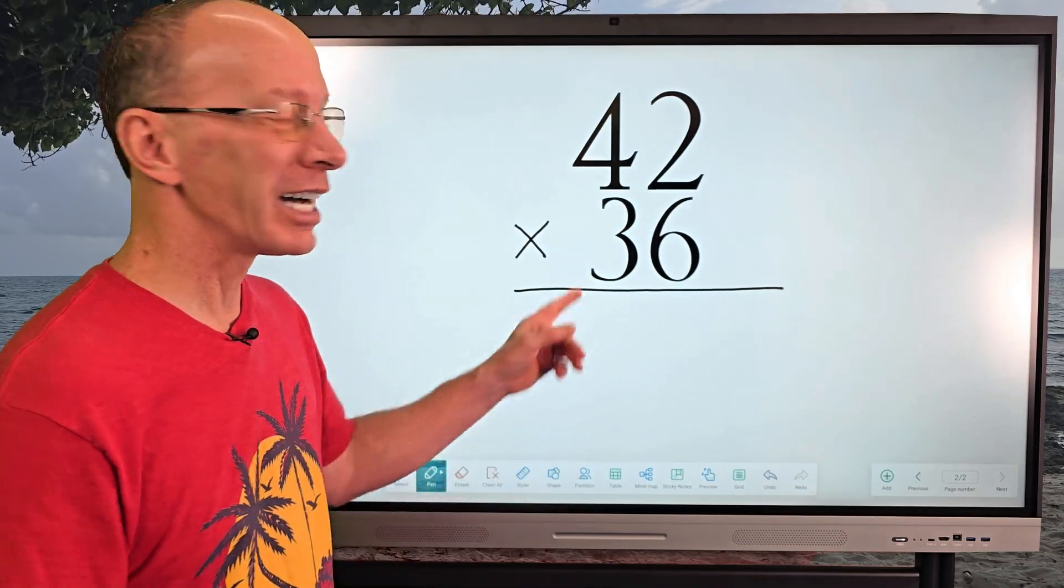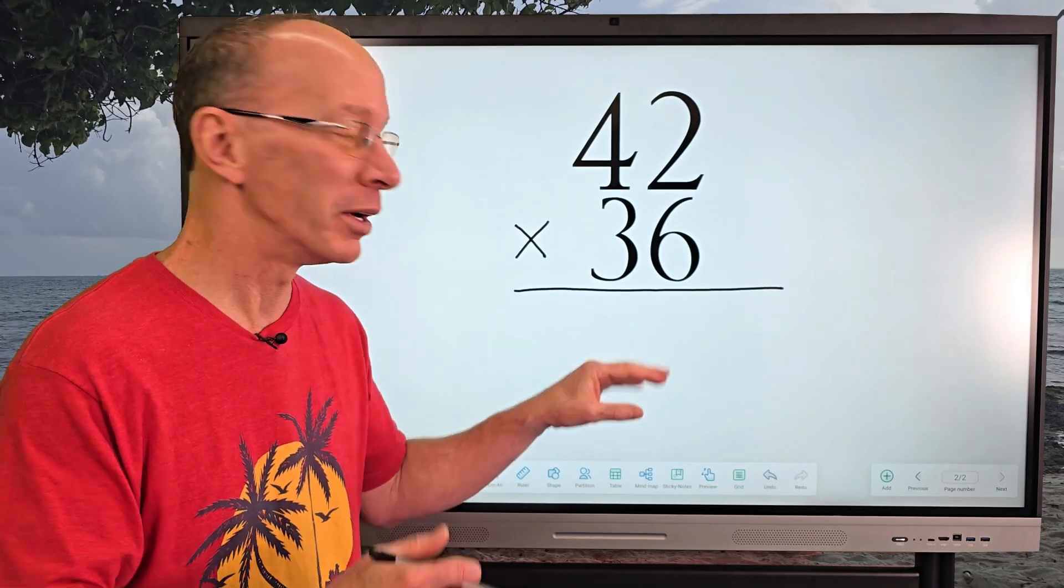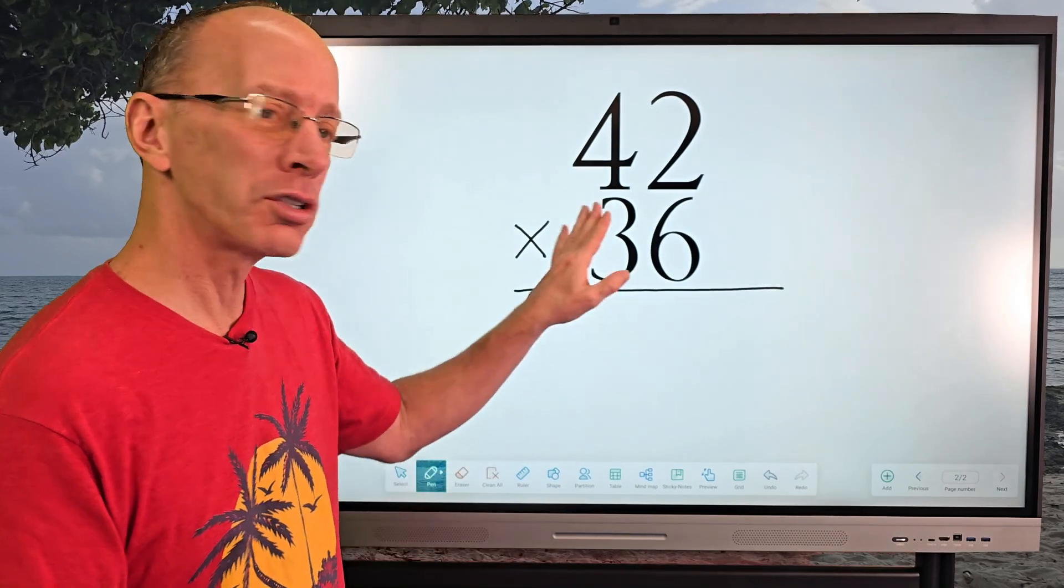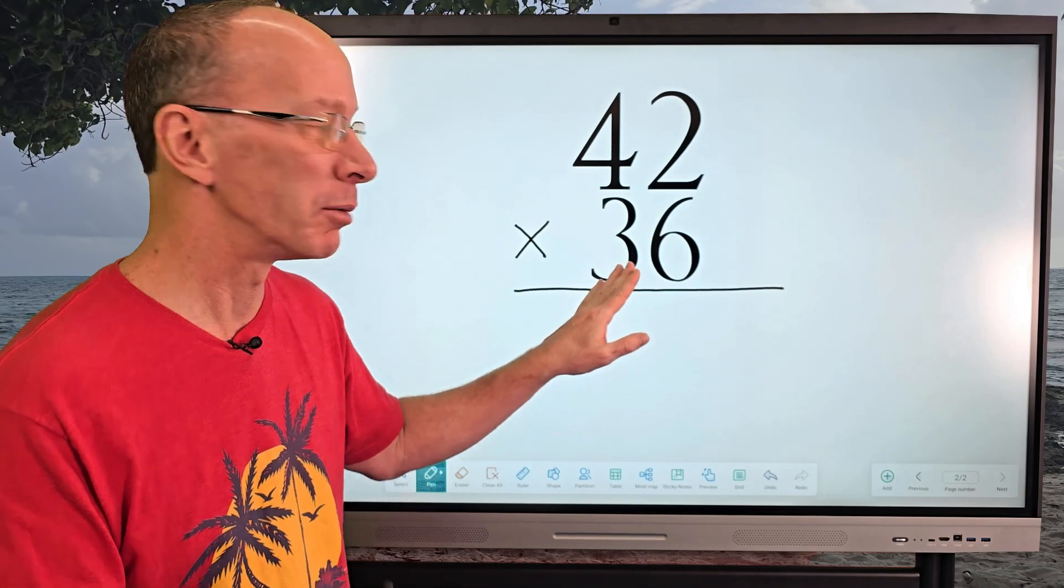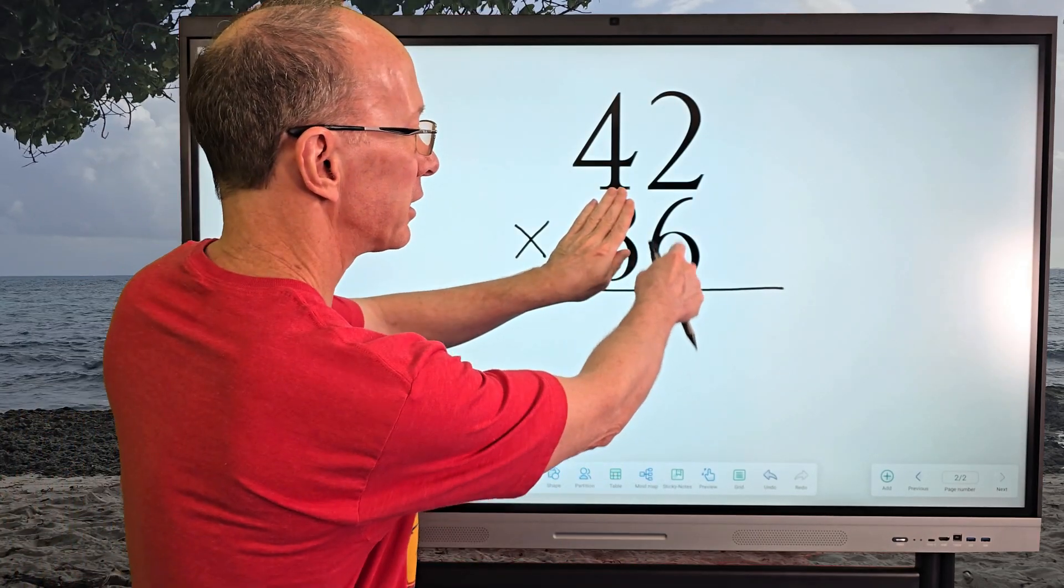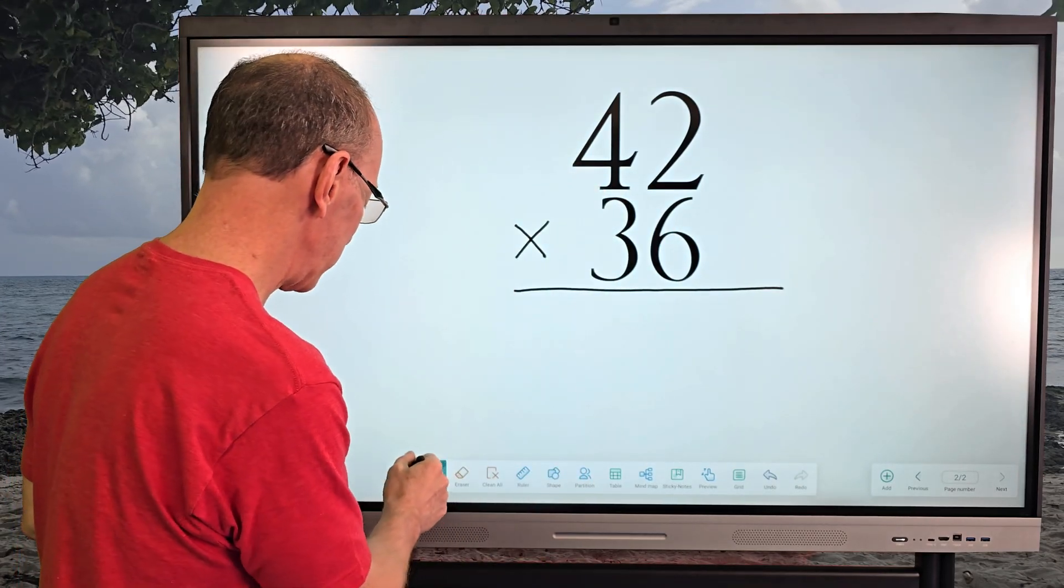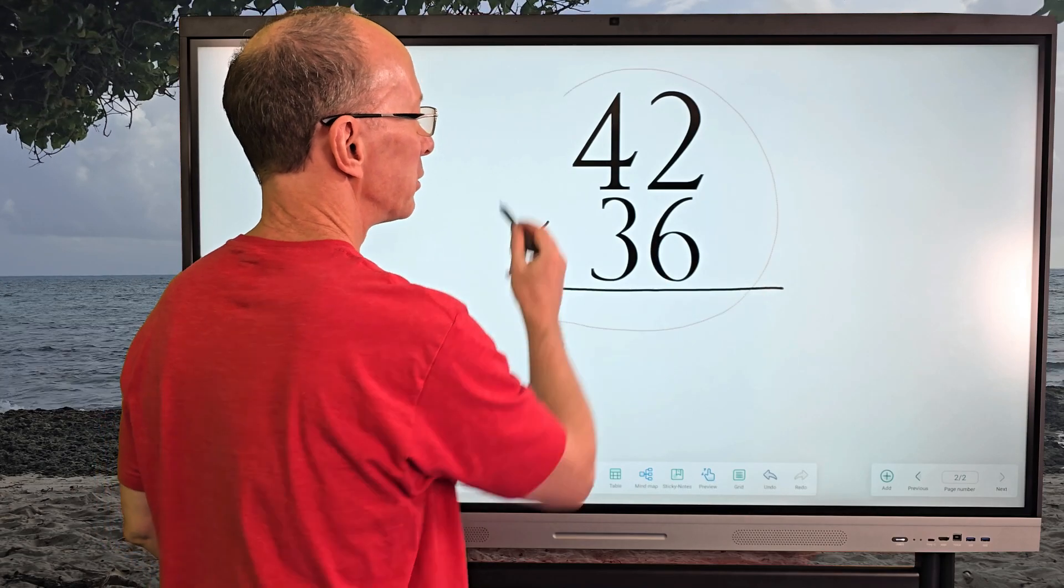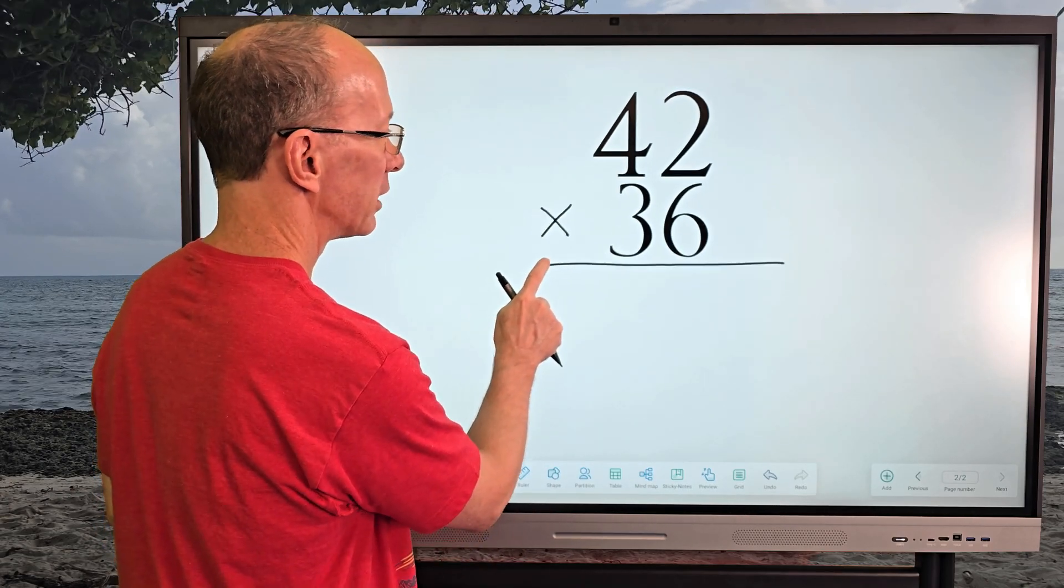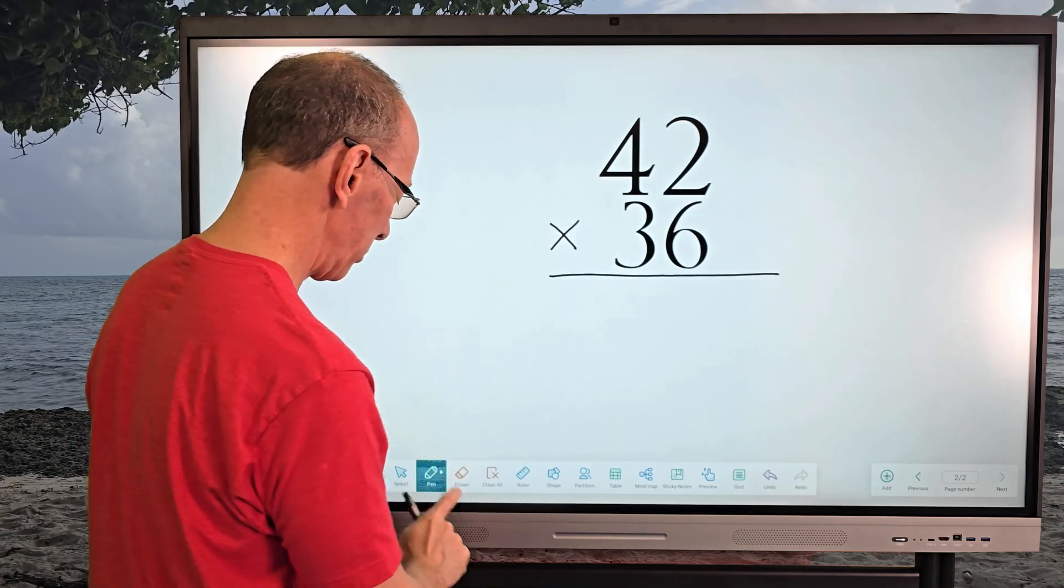We have 42 times 36. When we do multiplication with double digits, just treat it like a single-digit number at first. We're going to hide that three right there. And we're just going to take six times two and then six times four. All right. So let's go ahead and make this problem just a little bit smaller so I can fit this on the board. Put that over here. All right, let's go ahead and begin.